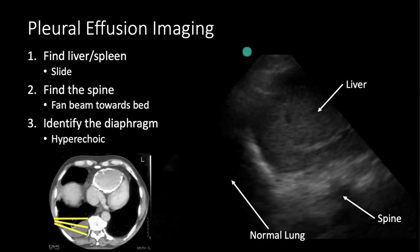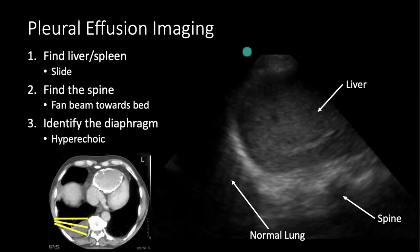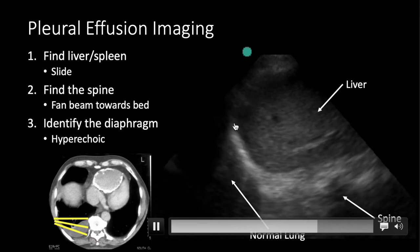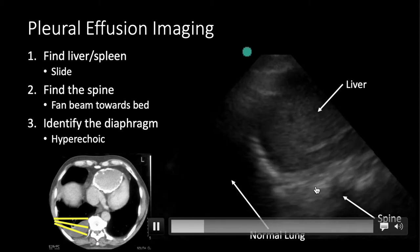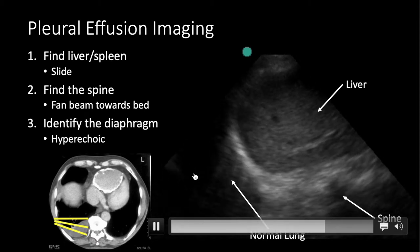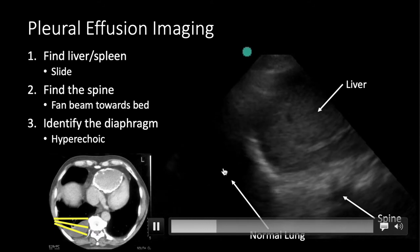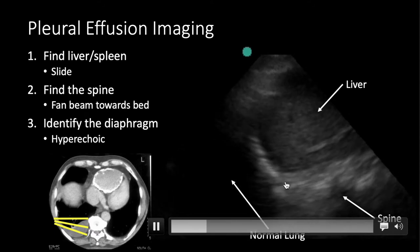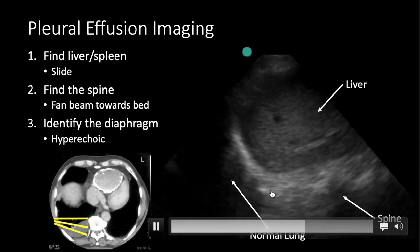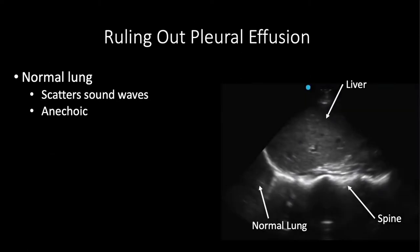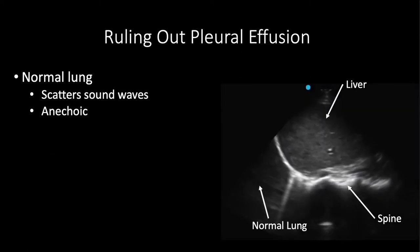The key structures to visualize are liver, diaphragm, and spine. Normally lung is black or anechoic when it's above the diaphragm, and the spine disappears above the diaphragm. That's normal.